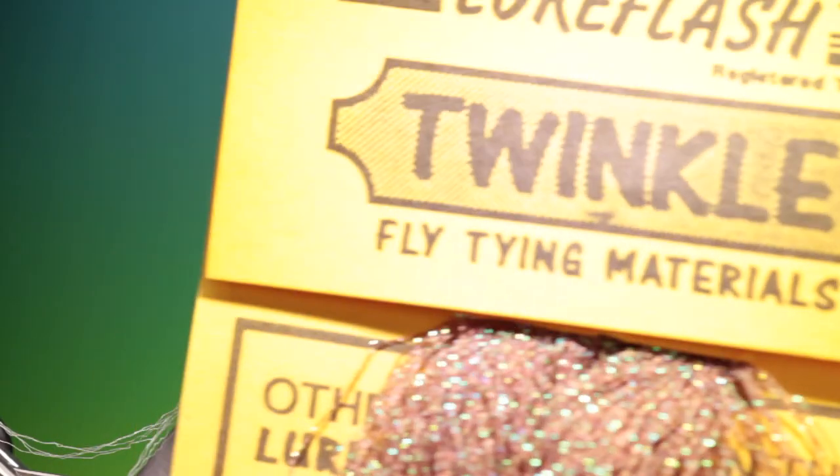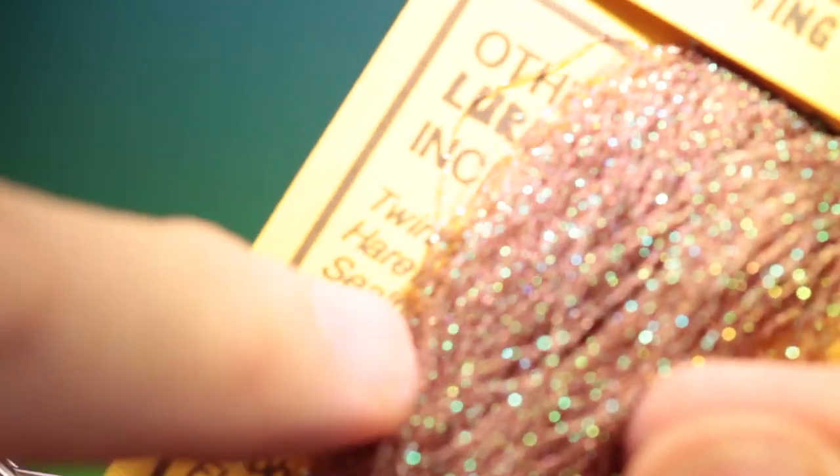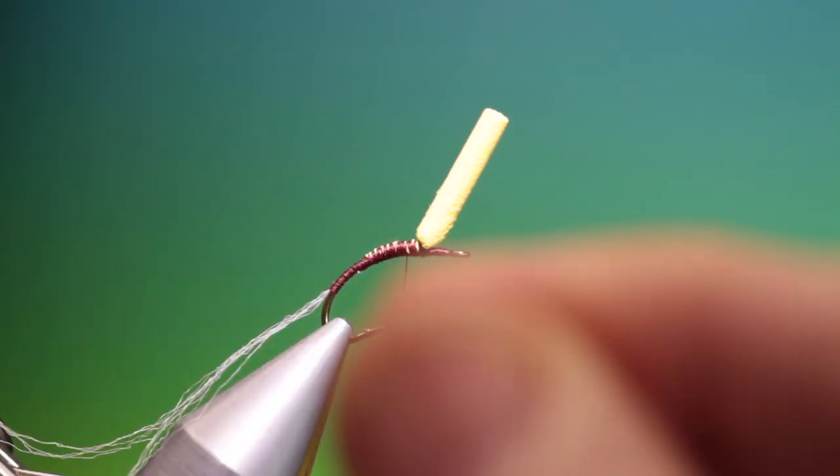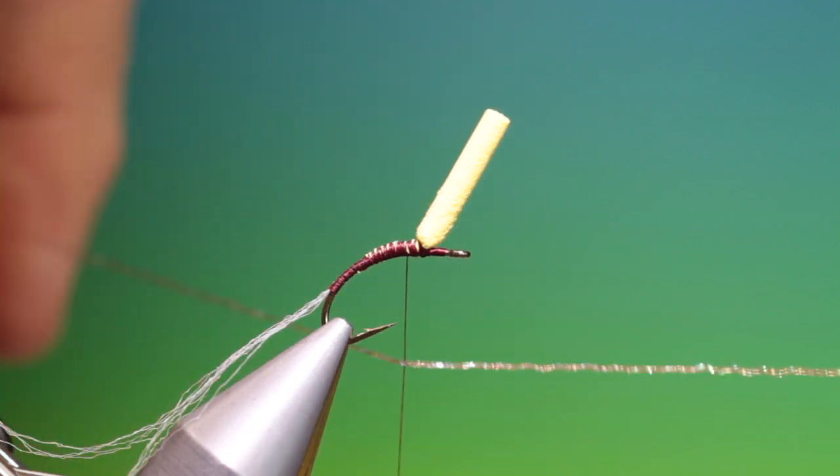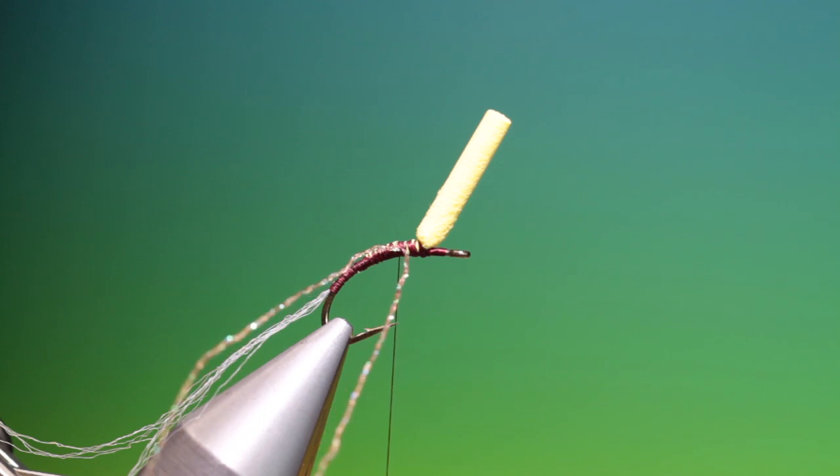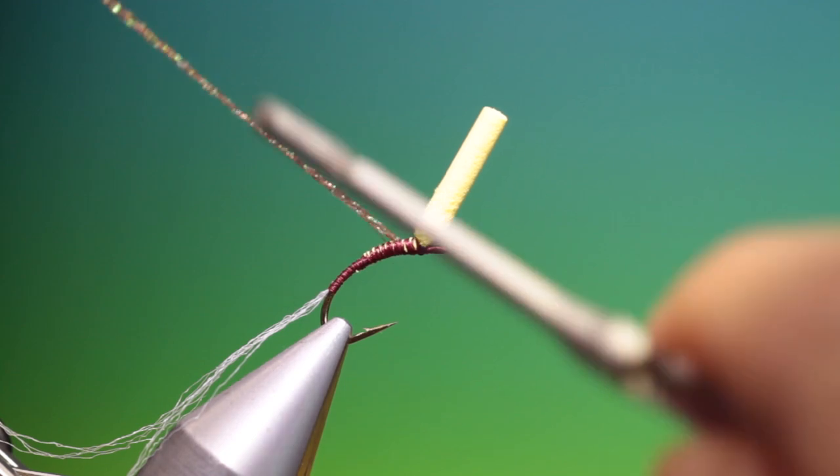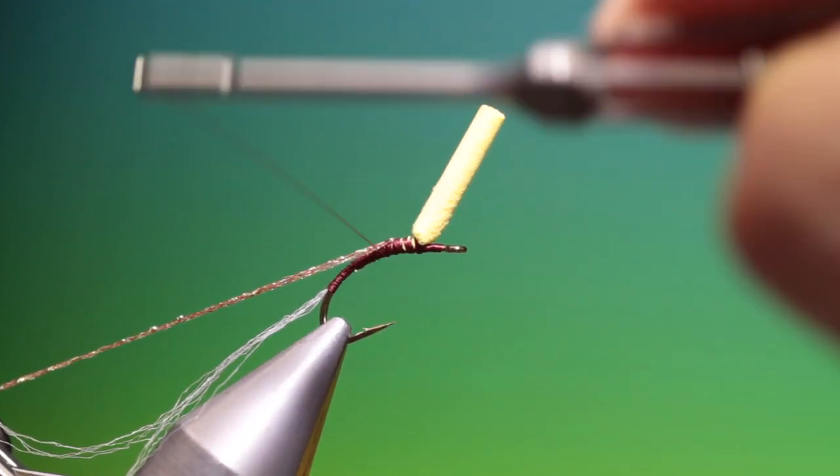This is twinkle. It's kind of a dull crystal flash. We take one strand of that. We hook it under the tying thread. Pull it around. And make sure that both sides are the same length.